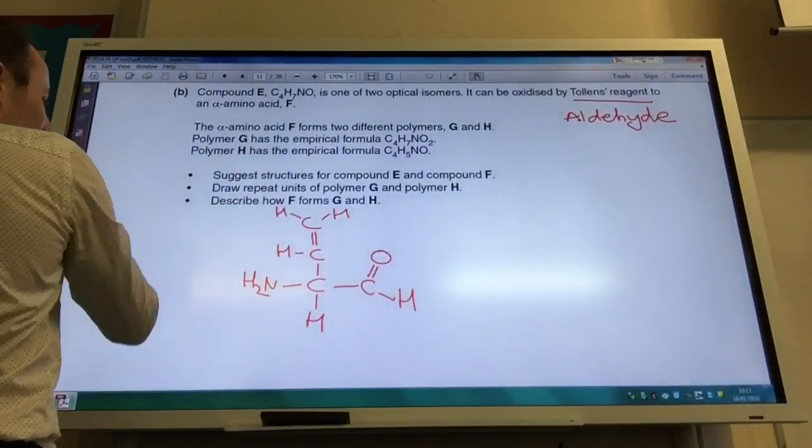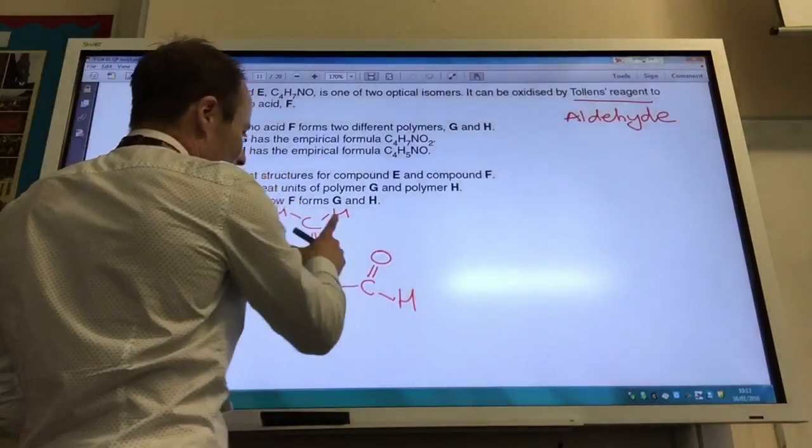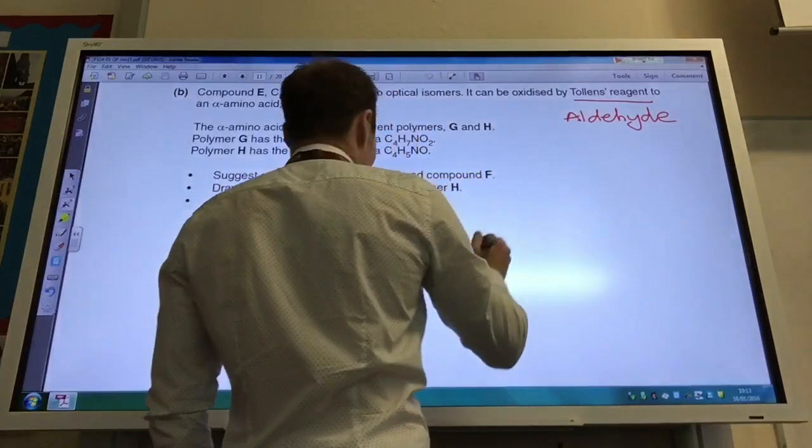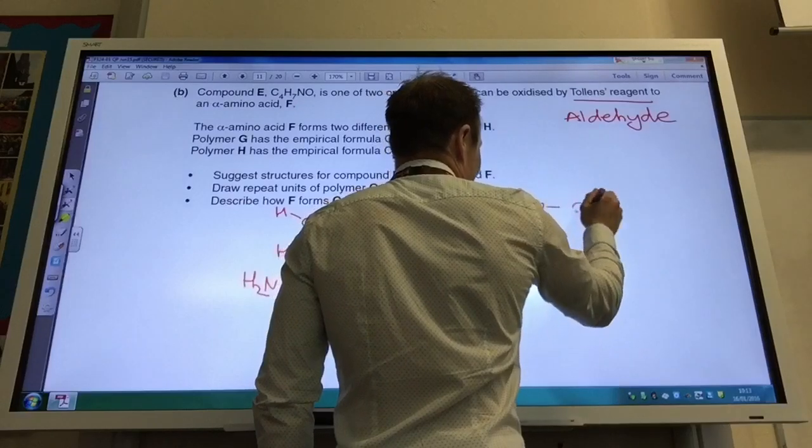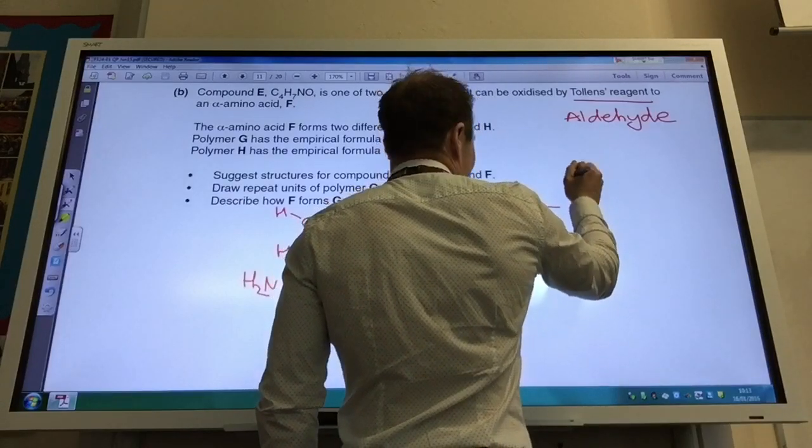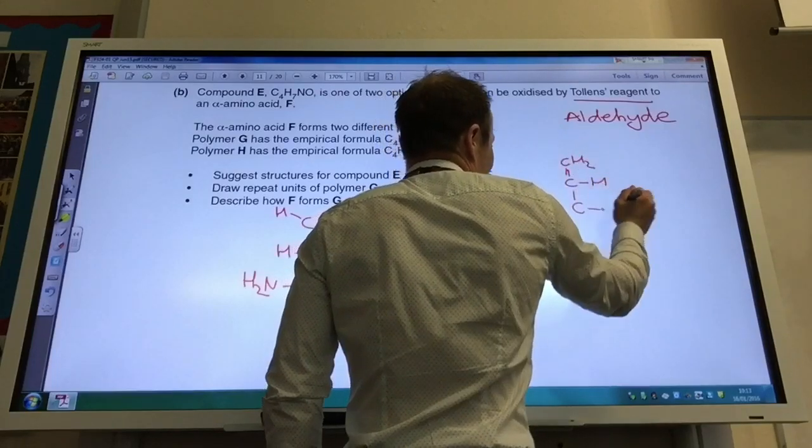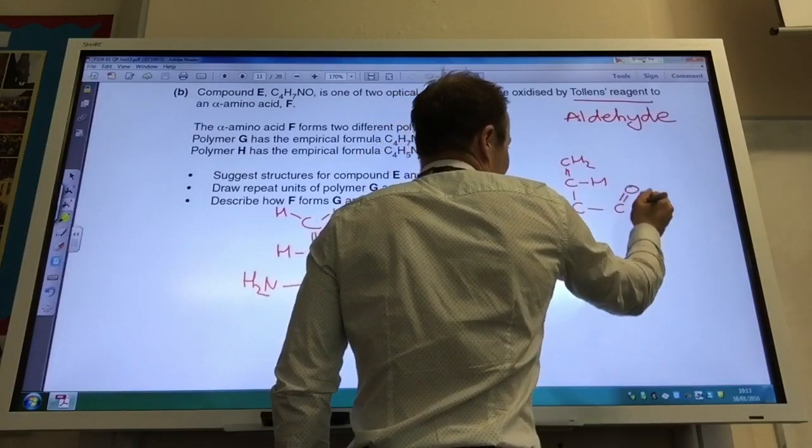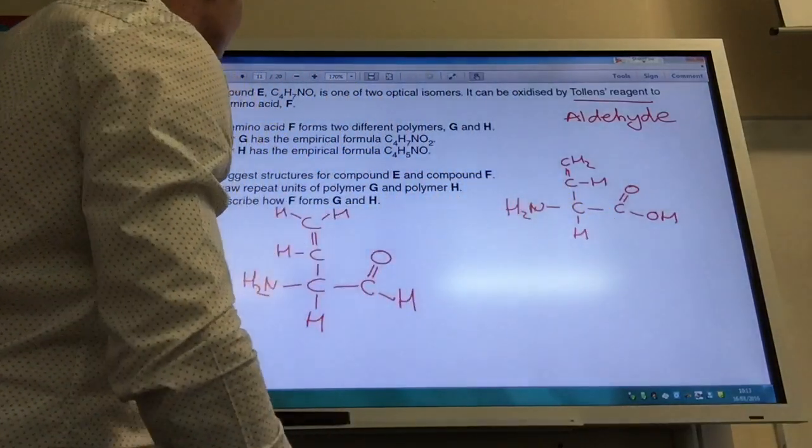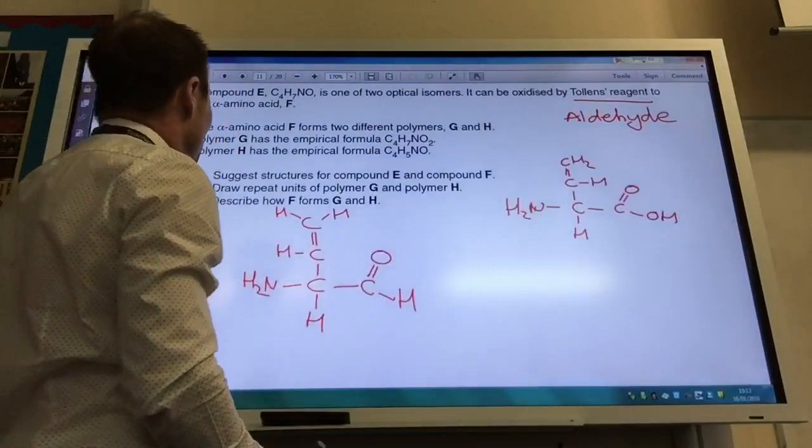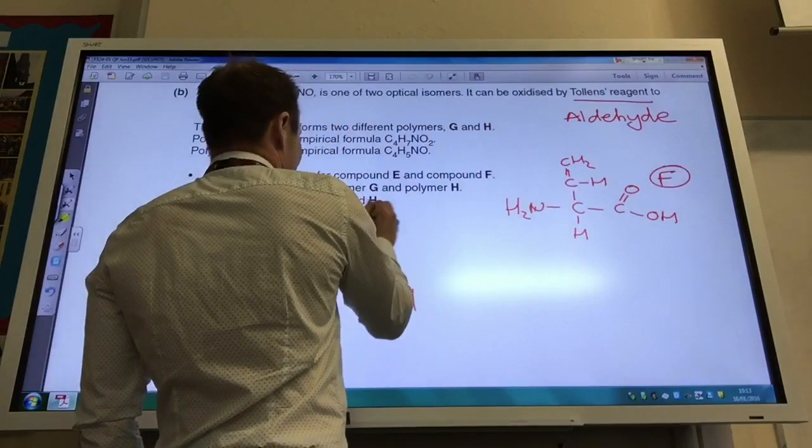That is my first one. Obviously the next one to get to my amino acid is quite easy because I'm just changing that into a carboxylic acid. So I take my basic structure to be the same, CH double bond, CH2, and then that just gets oxidized to a carboxylic acid like so. So that there is my alpha amino acid F. This guy, of course, is E.